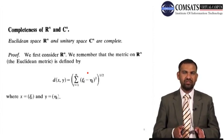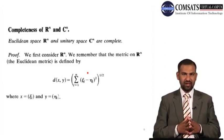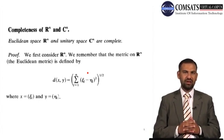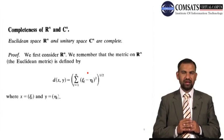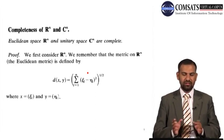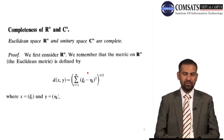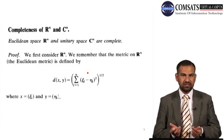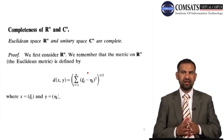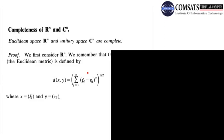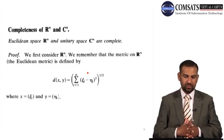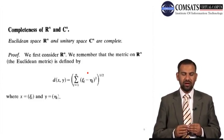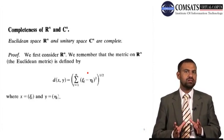For the completeness strategy, every arbitrary Cauchy sequence must converge within the space. We consider the space R^n and define a metric on it. For example, the Euclidean metric is d(x, y) = (sum from j=1 to n of |x_j - eta_j|^2)^(1/2), where each x is an n-tuple and y is also an n-tuple with components eta_1, eta_2, up to eta_n.